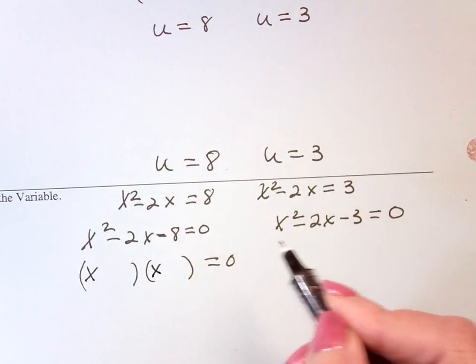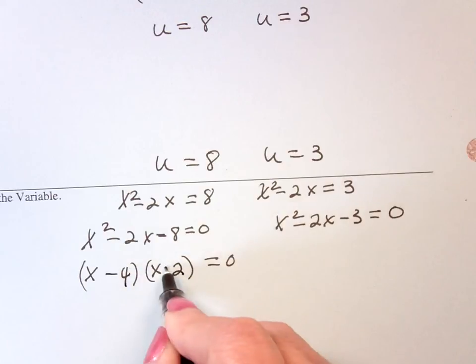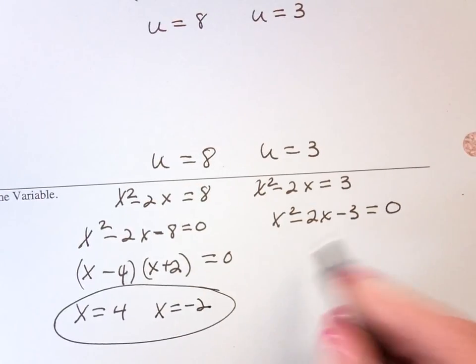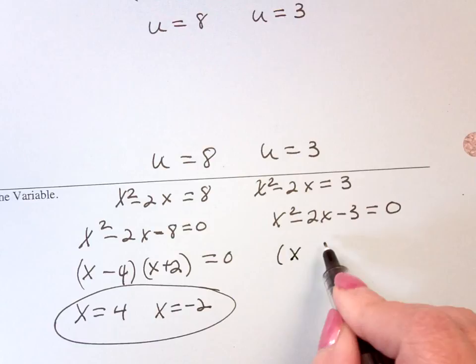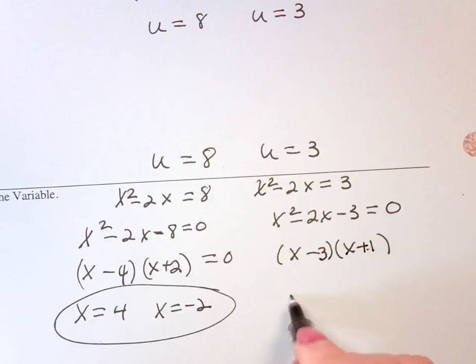Like this, x and x. This is 4 and 2 and minus and plus, so that x is 4, x is negative 2. So I picked 2 up out of there. This factors into x and x, 3 and 1, minus plus, so that x is 3, x is negative 1.